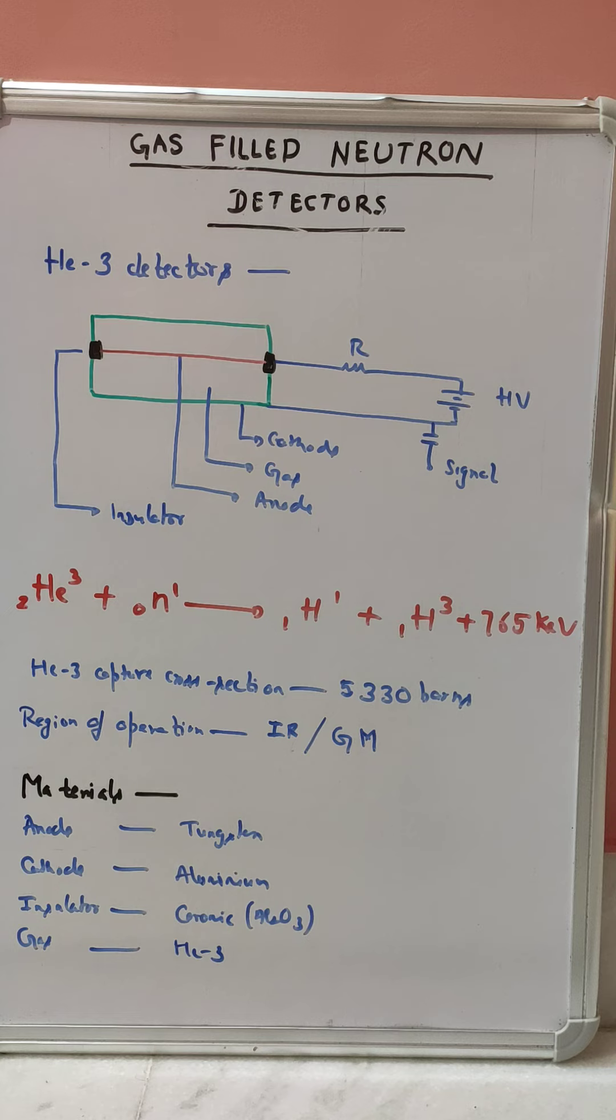We can also use it in Geiger-Muller region. If there is no gamma present, then we can use it in Geiger-Muller region. If we want to operate in current mode, we have to use it in ionization region.